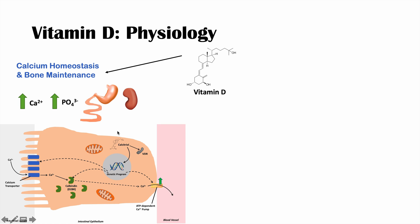Calcitriol enters into the enterocyte and can do a couple of different things. It can enter into the nucleus and activate genetic programs that lead to the production of calcium transporters on the intestinal lumen side. It can also increase expression of calbindin.